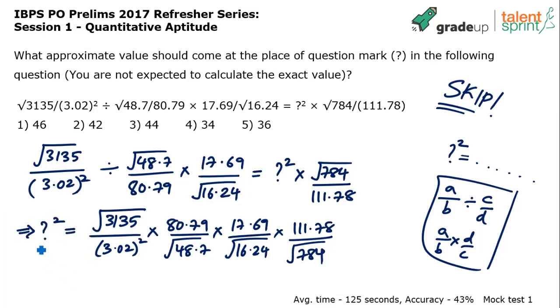So what I would do is, I'll show you what approximations we have done in a different color. So this 3135 becomes 3136 approximately. This 3.02 is being taken as 3 square approximately. 80.79, I'll take it as 81 approximately. 48.7, I'll take it as 49 approximately. 17.69, let us take it as 18. 16.24, let me take it as 16.